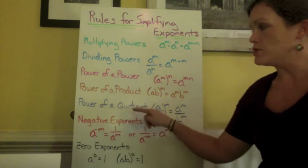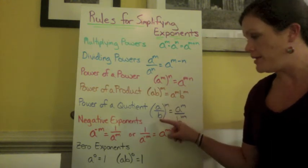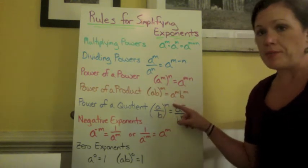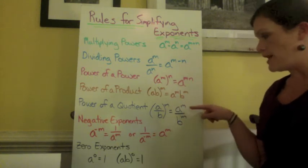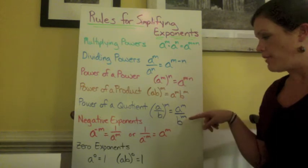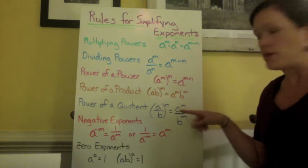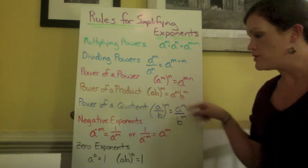We have power of a quotient. That's when we're dividing. So if we have a divided by b all to the m power, we have to say that that's equivalent to a to the m power divided by b to the m power. So again, both variables would get the exponent the same way with the product.